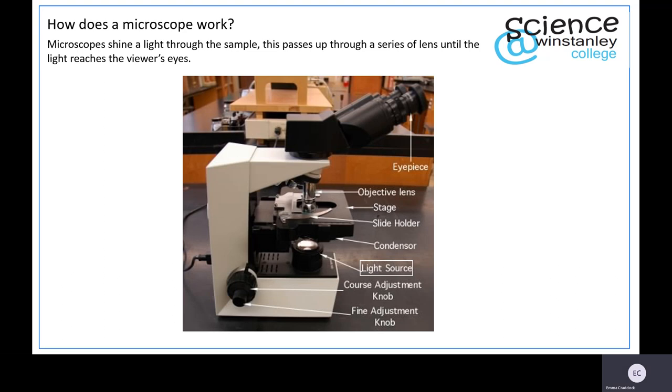So how does a microscope work? Well it works by light. The first bit of a microscope to be able to see your image is right at the bottom, and that is your light source.